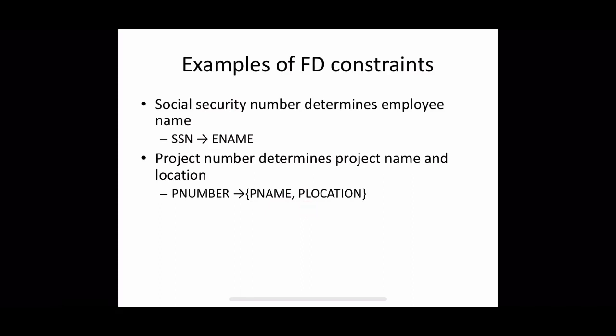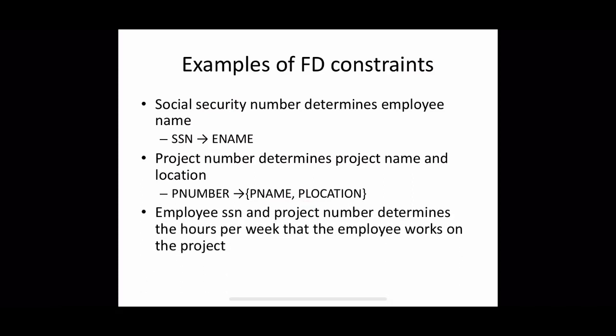Another example: employee SSN and project number together determine hours per week. The left-hand side can be an attribute set rather than a single attribute. So the combination of SSN and project number functionally determines hours per week — meaning any two tuples with the same SSN and project number combination must have the same hours value. This is denoted as {SSN, project_number} → hours.